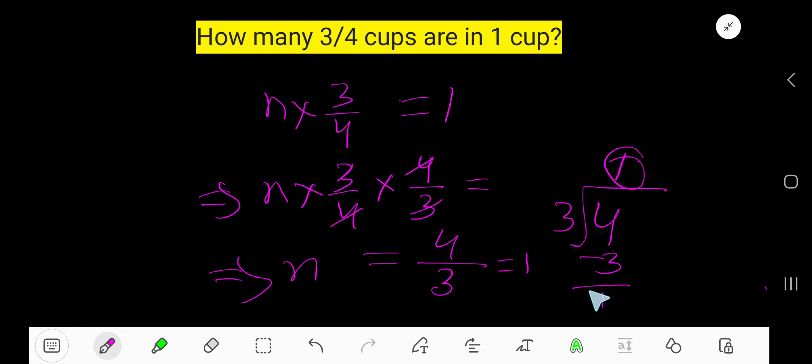That is, n equal to one and one-third. What does this mean? This multiplication means repeated addition.